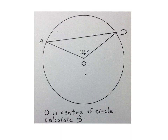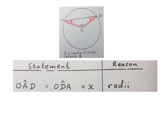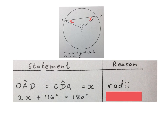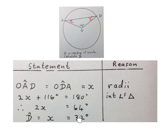The next exercise looks like this. O is the center of the circle. They ask us to calculate the size of angle D. One way to answer is to write: angle OAD equals angle ODA, and substitute both with X. The reason they are equal is because we have radii — those two lines are both radii and equal in length, so the angles opposite them are equal. Reason: radii. Then: 2X plus 116 degrees equals 180 degrees — interior angles of a triangle. Subtracting 116 from both sides: 2X equals 64 degrees. Dividing by 2: X equals 32 degrees, which is also the size of angle D. Please stop the video and get your head around this solution.